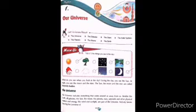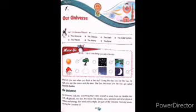When you look at the sky, what do you see during the day? During the day, we see the sun. At night, you see the moon and the stars. The sun, the moon and the stars are called heavenly bodies.